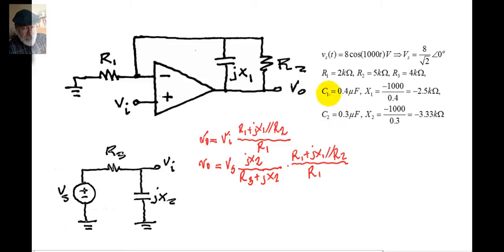Immediately we find the reactance of the capacitors, which are negative 1 over Omega C, that is negative 2.5 kilo ohms for C1, and negative 3.3 kilo ohms for C2.